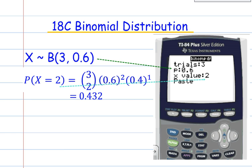Let me show you that again. So, you just populate all that information, so 3 and 0.6, 2 trials, sorry, 3 trials, and x being equal to 2, and that's 0.432.